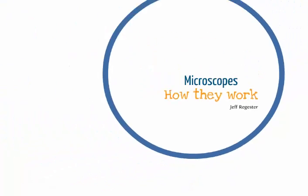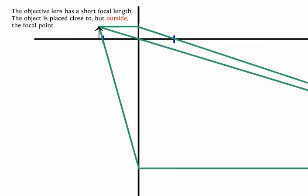Now, let's go ahead and take a look at that ray tracing diagram. This line here represents the objective lens. It has a short focal length, and the focal points are marked with these blue lines.